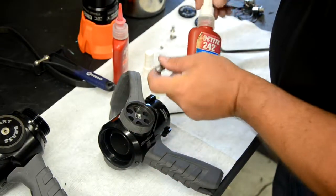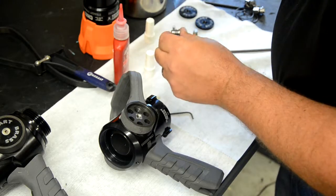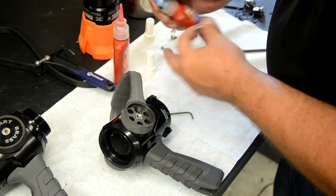Next, apply a small dab of blue Loctite number 242 or equivalent to the cam stop screws and reinstall them until tight.